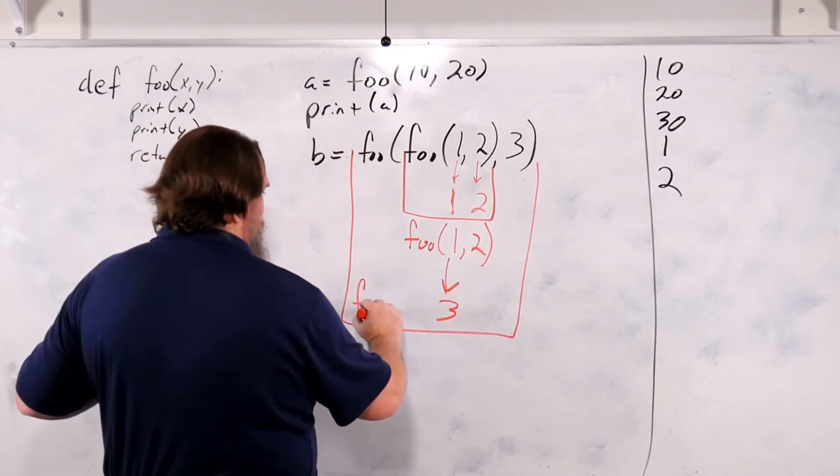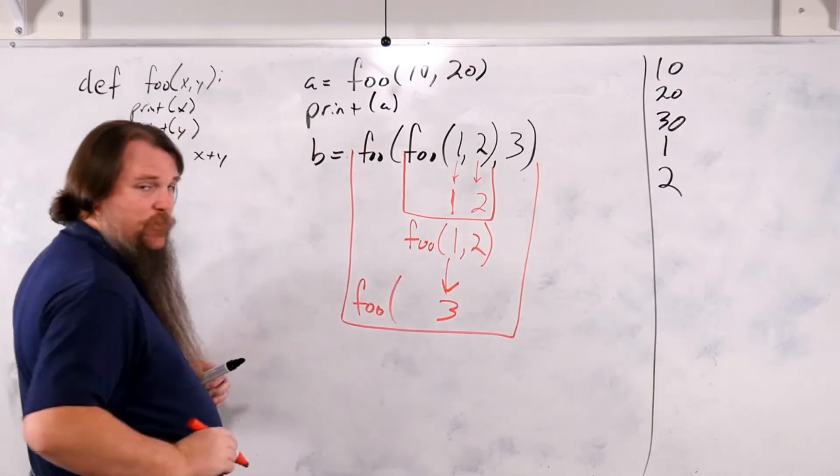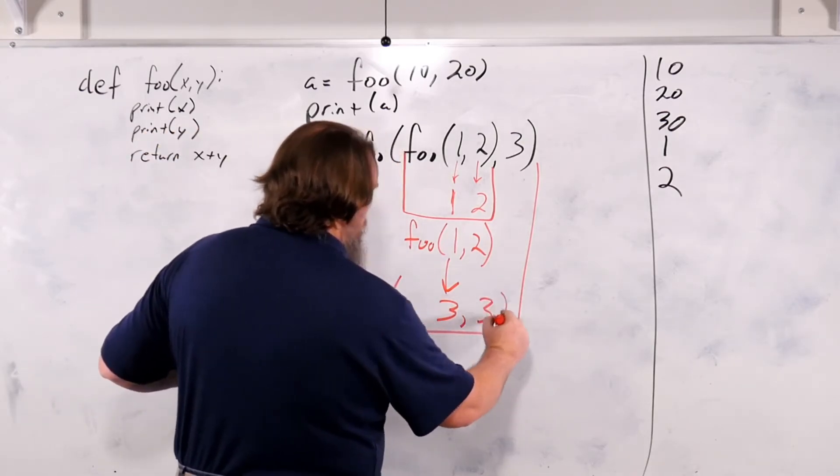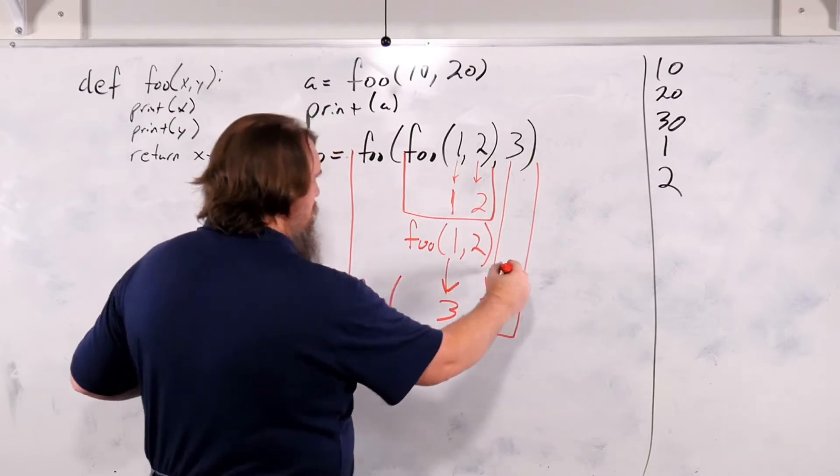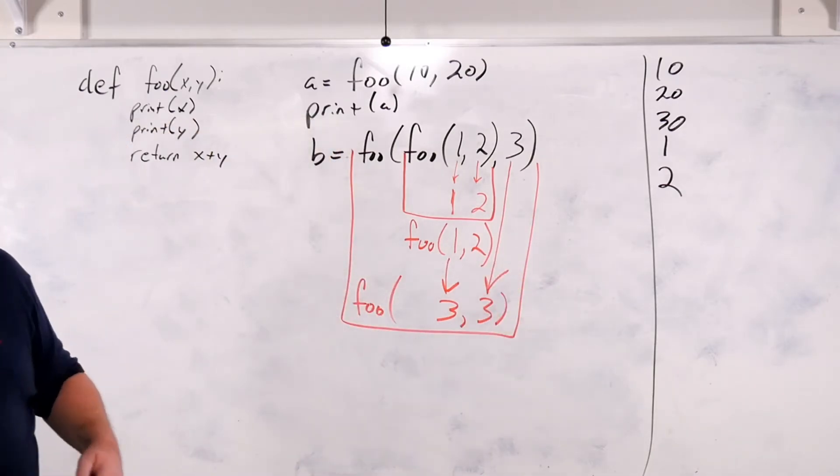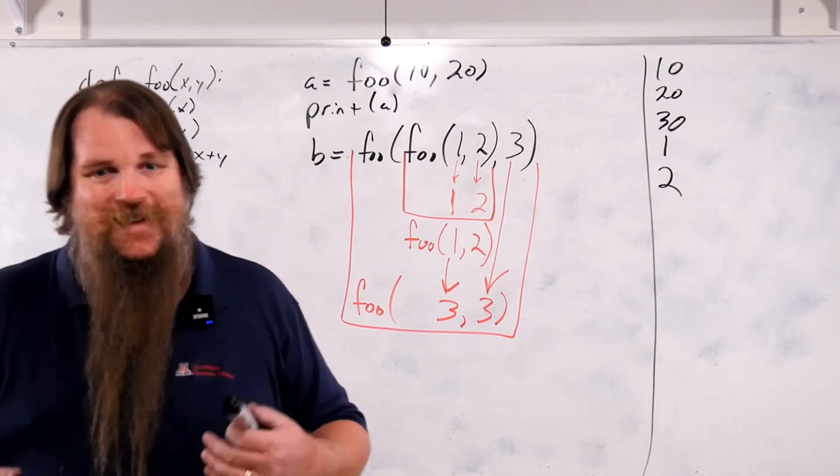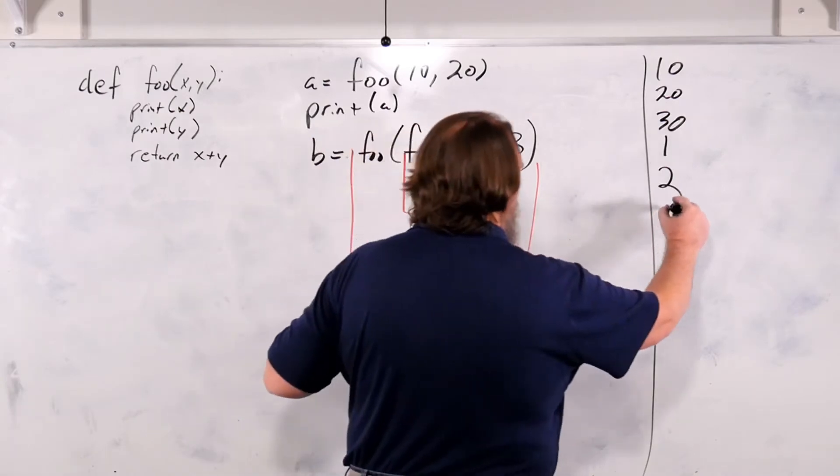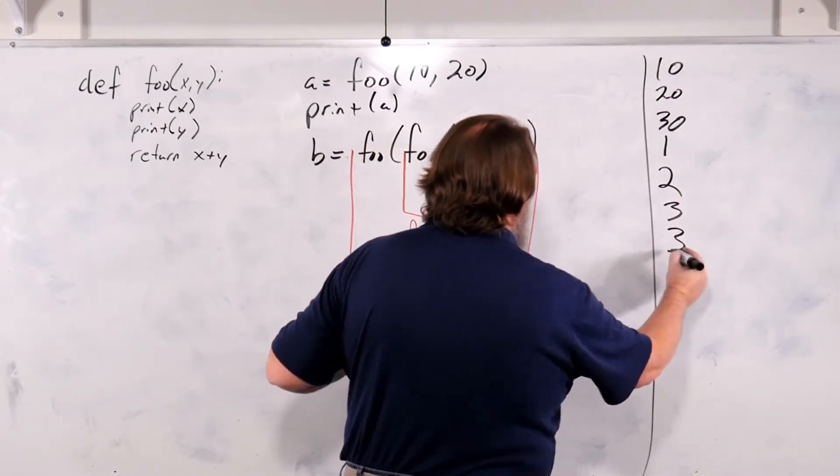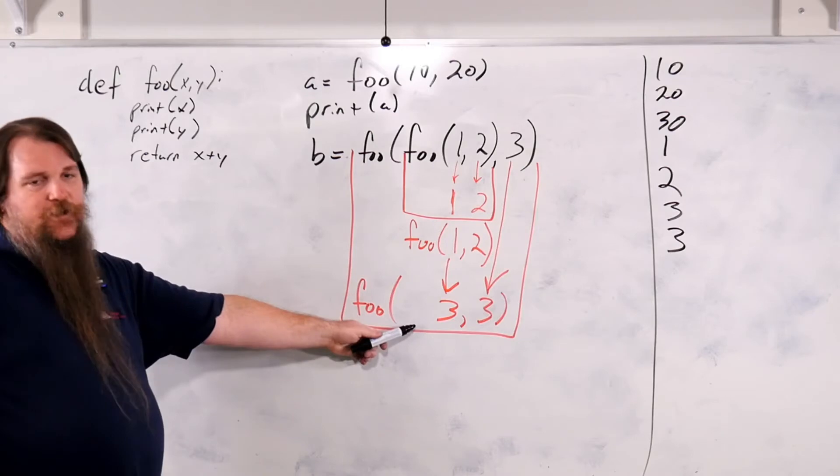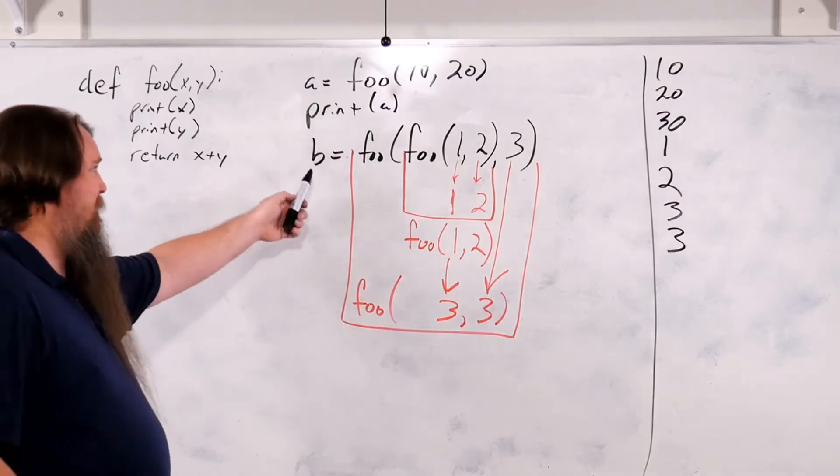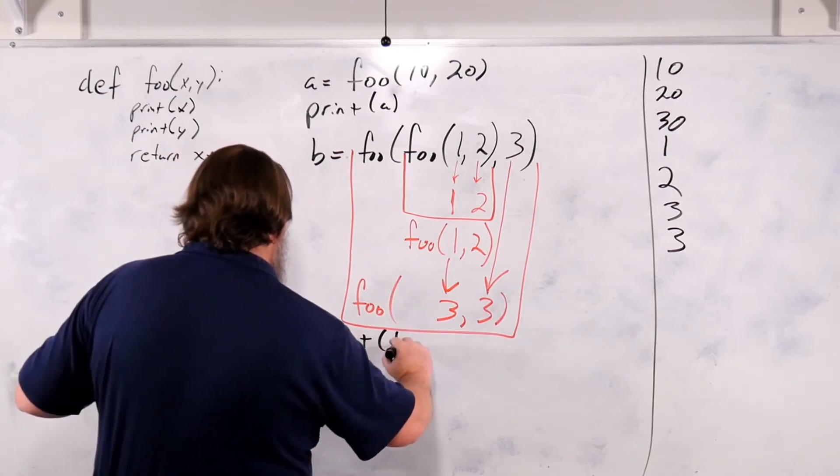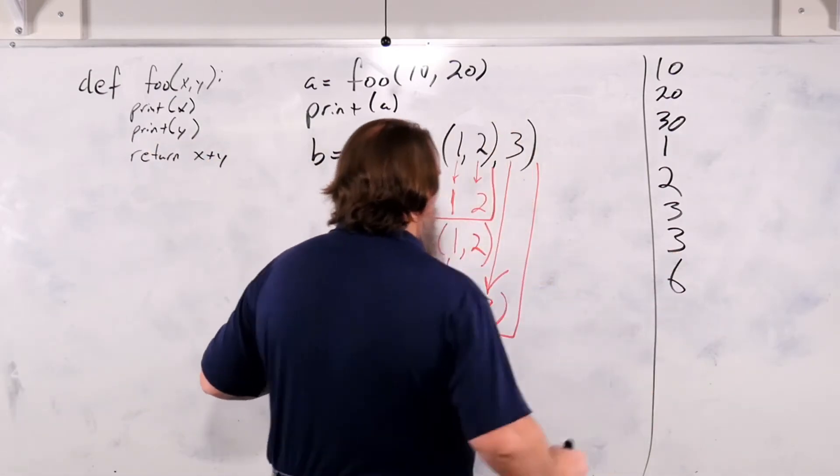This now allows it to run here. And what it's going to run is another call of foo, where the first parameter is three, and the second parameter is also three. So we've called foo once, now we're going to call foo again. Now both the parameters are three. So what is this going to return? This is going to return six. So B is six. If we print B, we're going to get the value six.